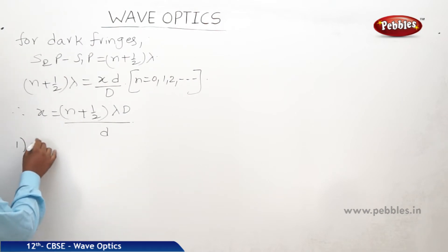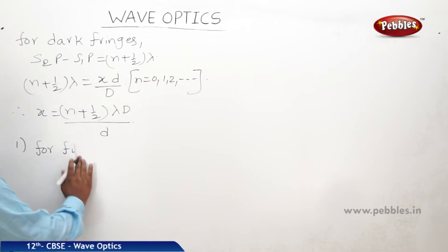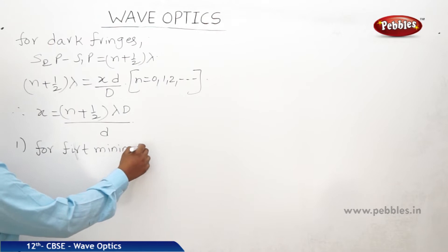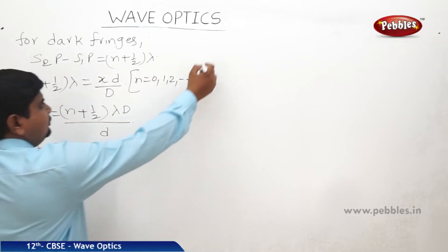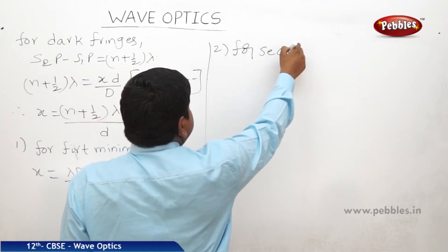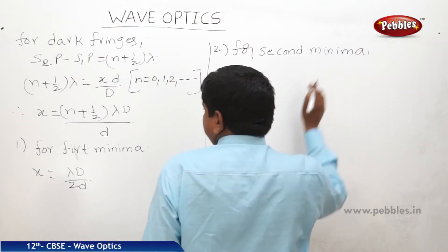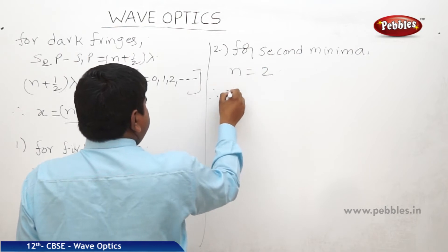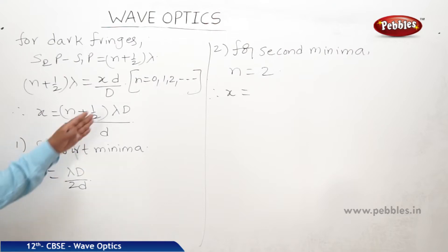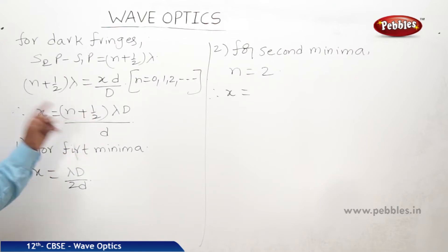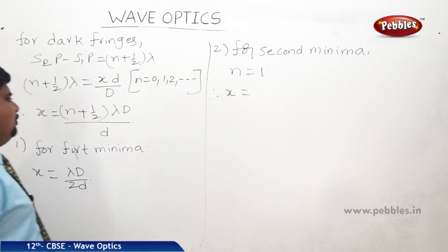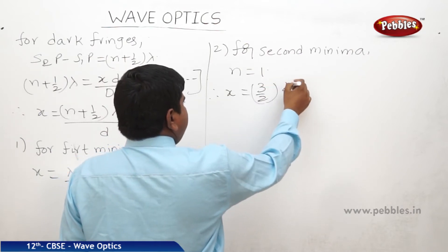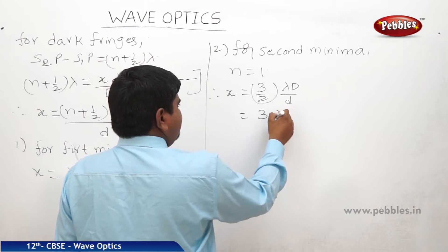For the first minima, n is equal to 0, therefore x is equal to lambda D by 2d. For the second minima, n is equal to 1 — not 2 — so 1 plus one-half is 3 by 2, giving x is equal to 3 lambda D by 2d.